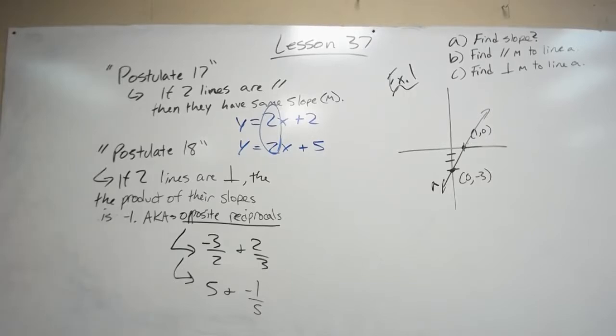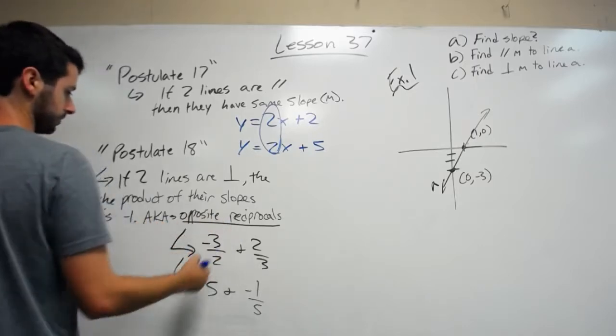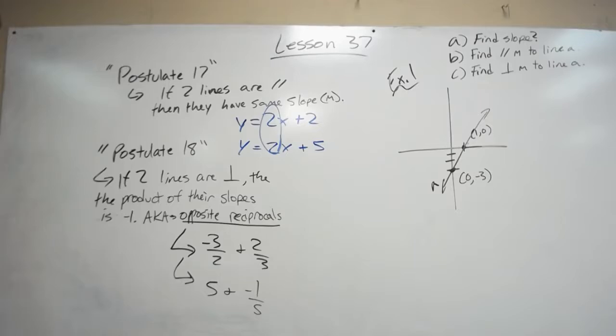Postulate 18 says if two lines are perpendicular, then the product of their slopes is negative 1. An easier way to explain this is what's known as opposite reciprocals. What's an opposite reciprocal?